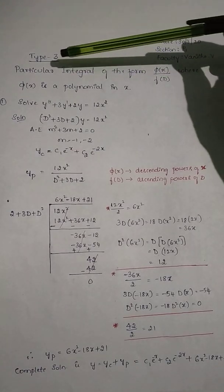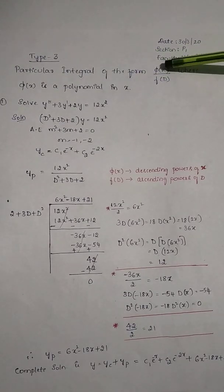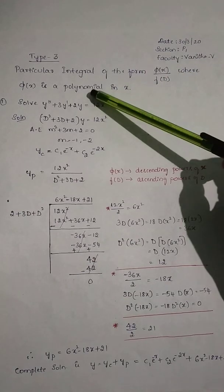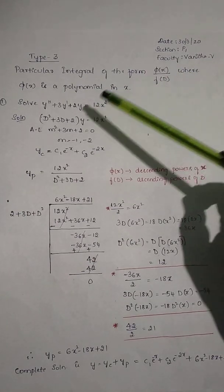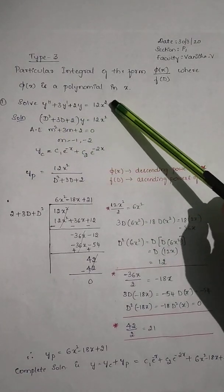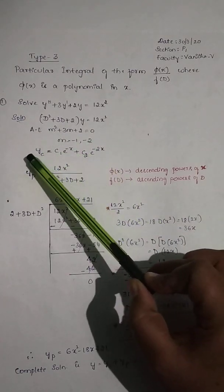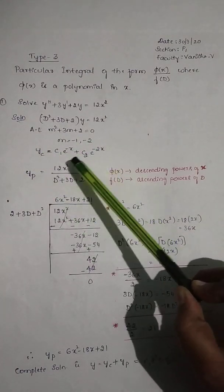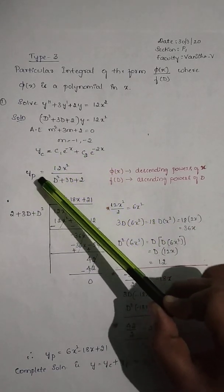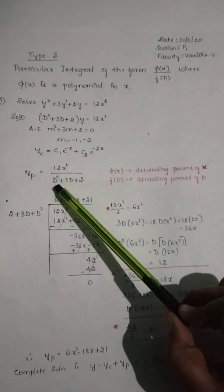Today we'll solve problems on Type 3, that is particular integral of the form phi of x divided by f of D, where phi of x is a polynomial in x. We'll solve one problem: y'' + 3y' + 2y = 12x². As usual, write the auxiliary equation, find the roots, write the complementary solution yc, and then find the particular integral. Write yp = 12x² divided by (D² + 3D + 2).